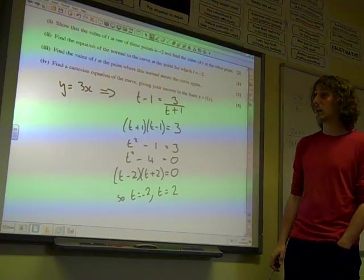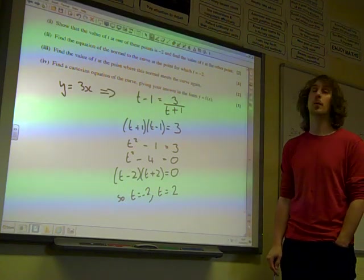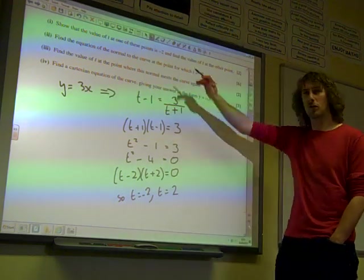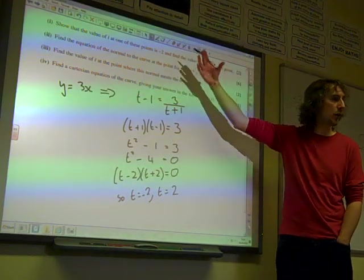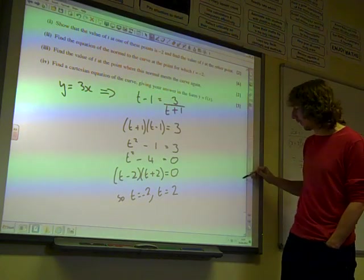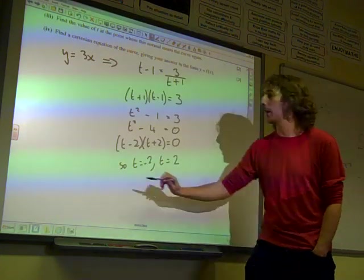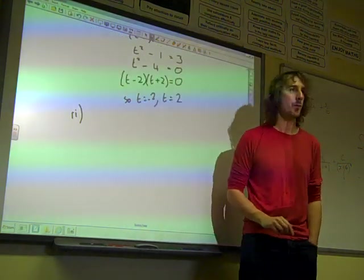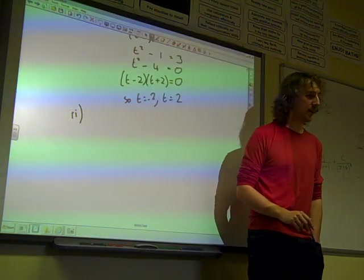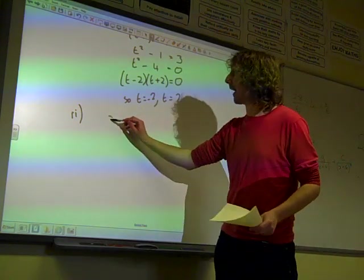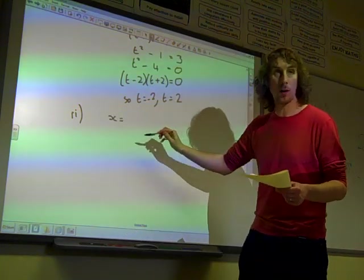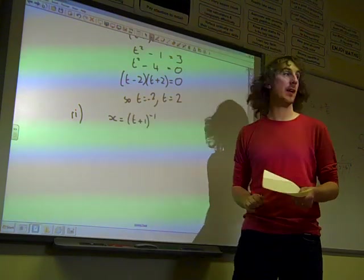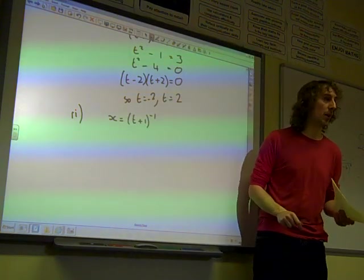Find the equation of the normal to the curve at the point at which t equals minus 2. It doesn't necessarily relate to this, but this should be a standard thing that we're really used to doing. So if we're going to find the equation of the normal, we need to know dy by dx. So we need to differentiate each of these things. We had that x is 1 over t plus 1. If you like, we can think of that as being t plus 1 to the minus 1.